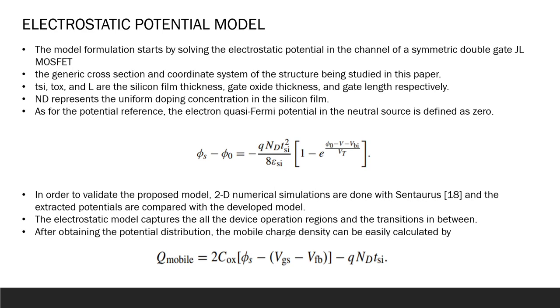The electrons quasi Fermi potential in the neutral source is defined as zero. The basic derivation: unlike the conventional inversion mode MOSFETs, the junctionless transistor operates from the full depletion to accumulation instead of inversion. The charge density arising from the holes can be ignored in the electrostatic analysis of n-type junctionless transistor. Finally, we are able to derive the equation.